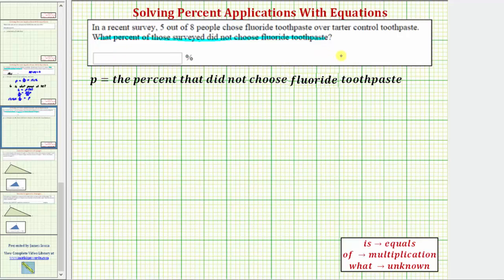Let's first answer the question this way, where because three out of eight did not choose fluoride toothpaste, p is equal to three out of eight or three-eighths, and now let's convert three-eighths to a decimal and then a percentage.